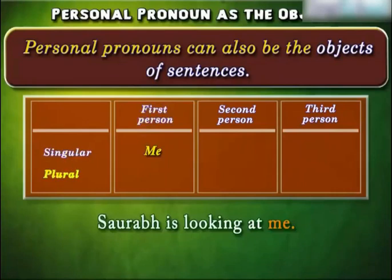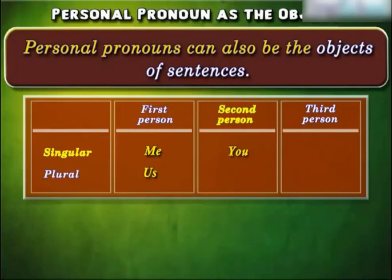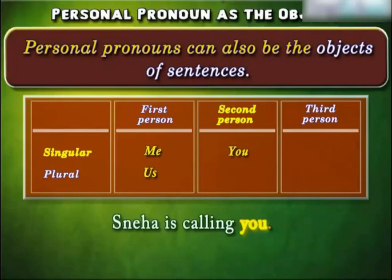In the plural form, the first person personal pronoun as the object will be 'us'. For example: 'The police have called us for interrogation' — here 'us' is the object. Similarly, in the singular form, the second person personal pronoun as the object will be 'you'. For example: 'Sneha is calling you' — here 'you' is the object of the sentence.